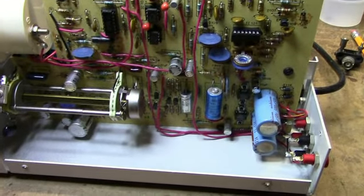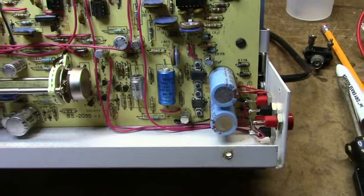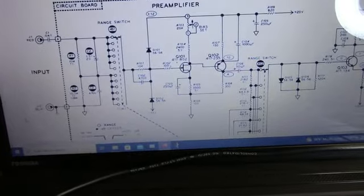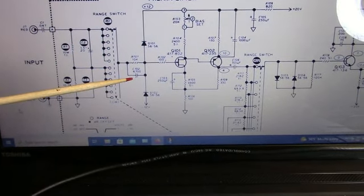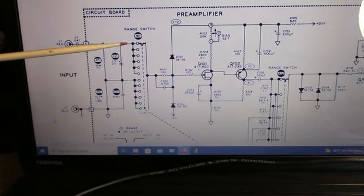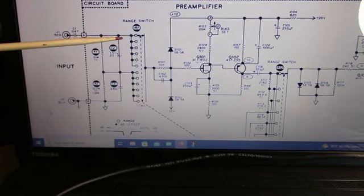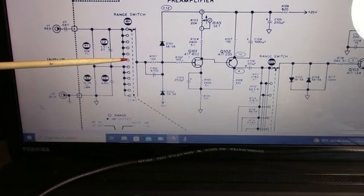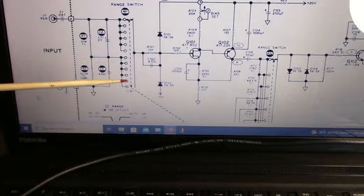The main range switch here. I'm measuring with a scope at C102, running in AC and going through the range switch. On the first six levels coming up from the lowest, I'm getting input. On the higher levels, I'm not.